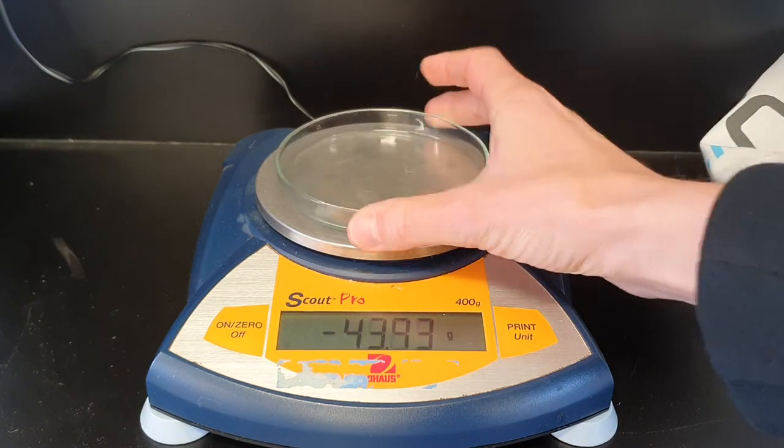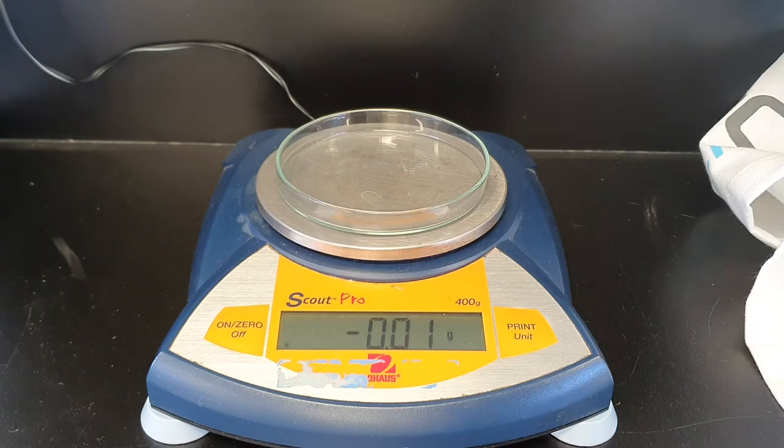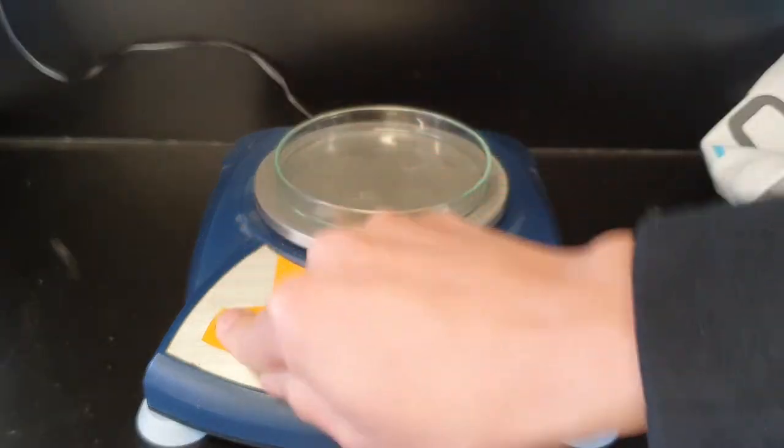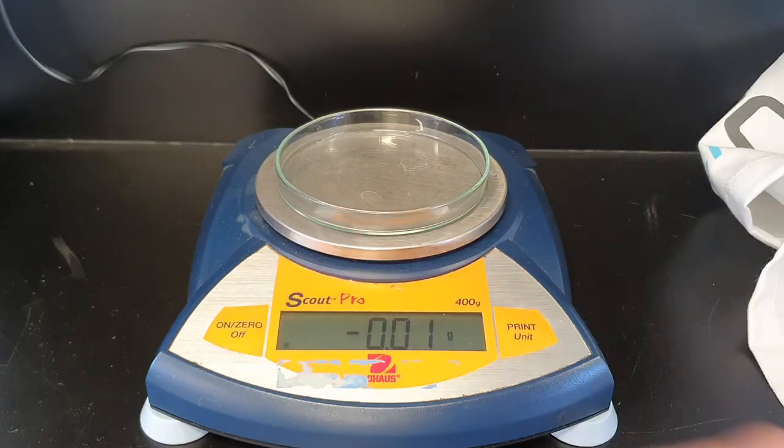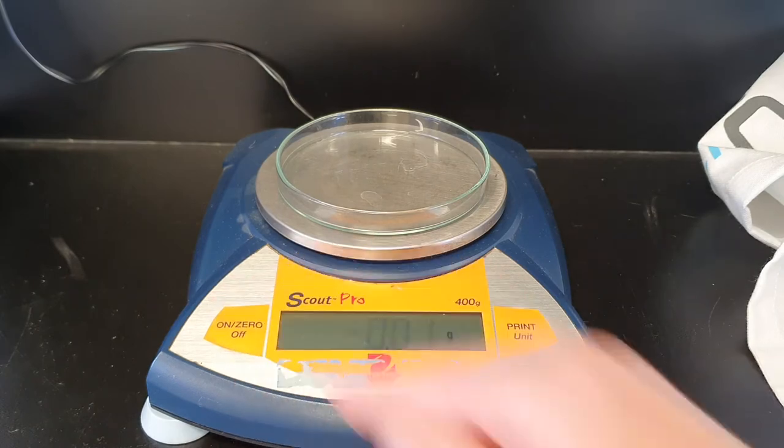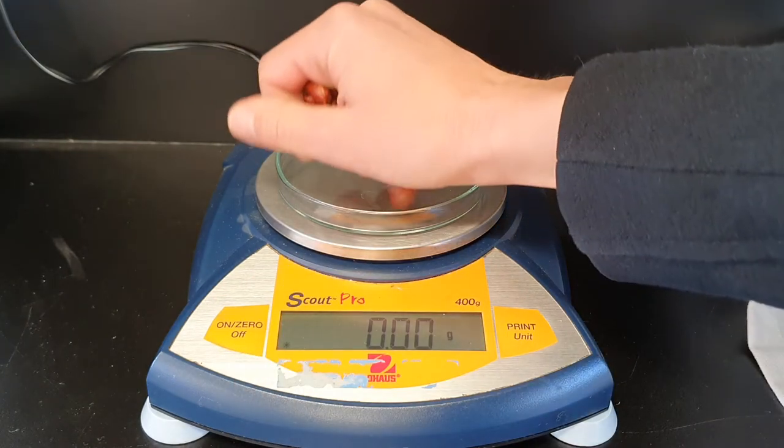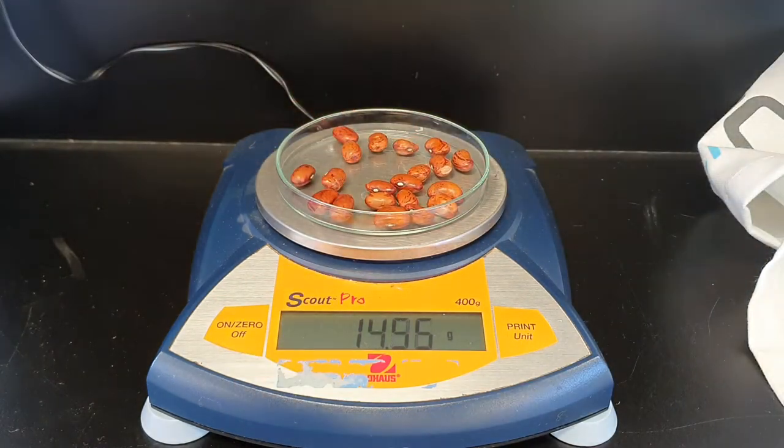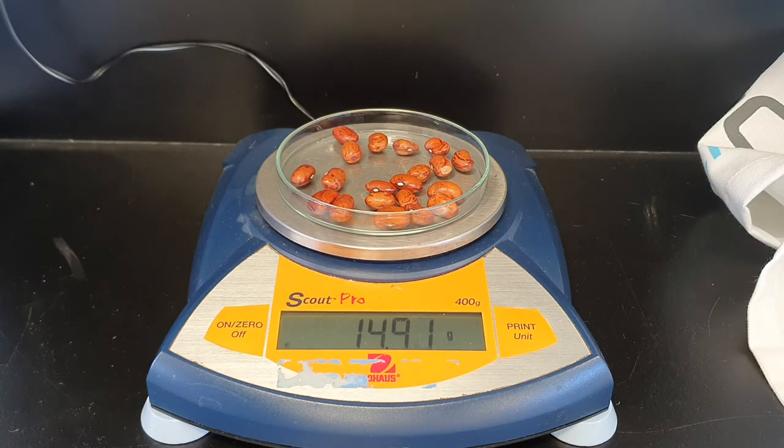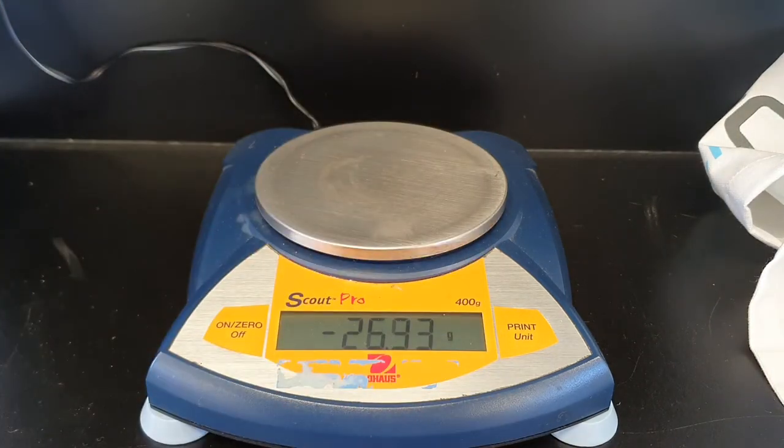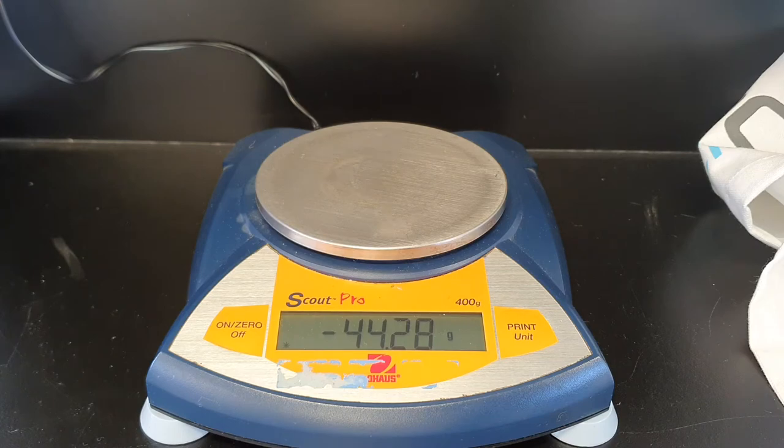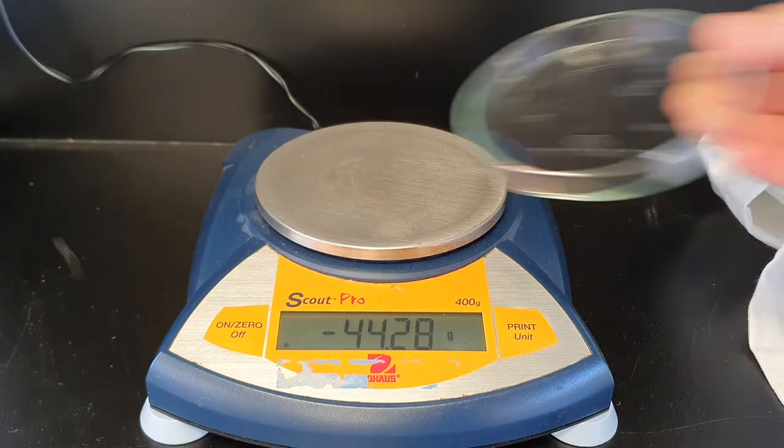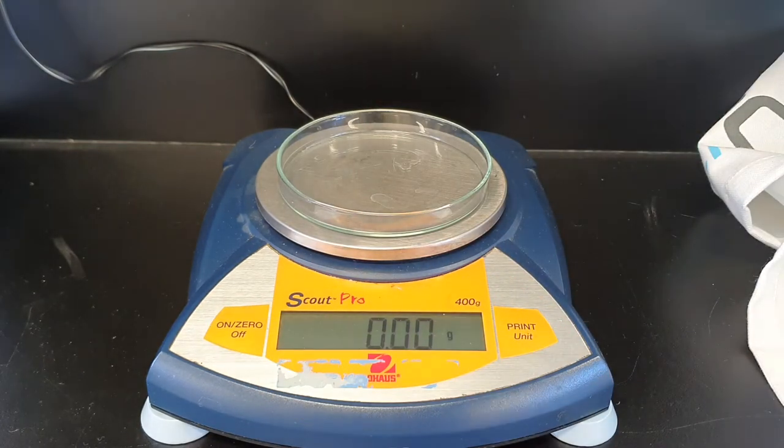And then I'm going to do the same for some beans. And I've got to zero that. And that is 20 beans. And that is 14.92 grams. So that is the same number of particles, but differing masses.